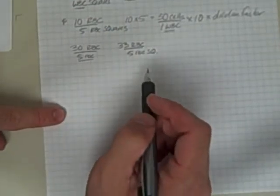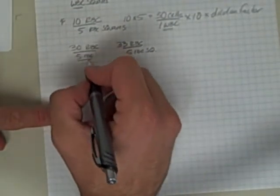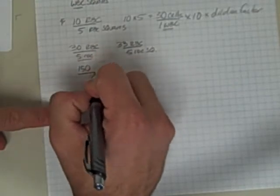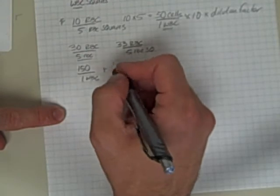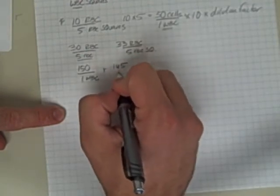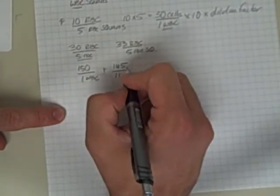So five times 30 is 150 in one white blood cell square, plus five times 33 is 165 in one white blood cell square.